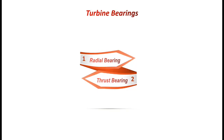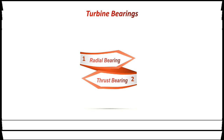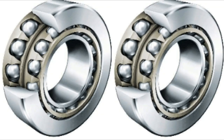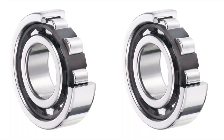Turbine Bearings. One of the turbine's basic parts is the bearing. There are two types of bearings used, based on the type of load acting on them: Radial Bearings and Thrust Bearings. For small turbines, they are mostly equipped with anti-friction bearings.